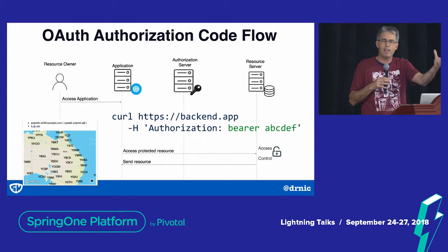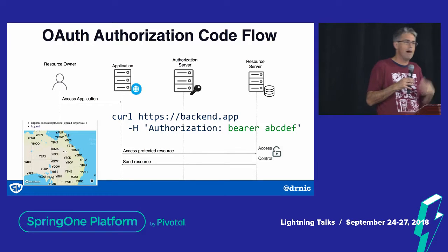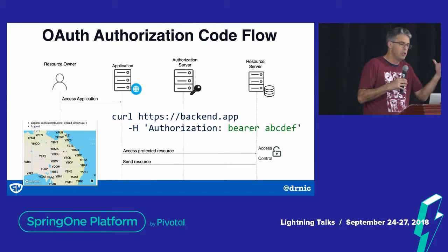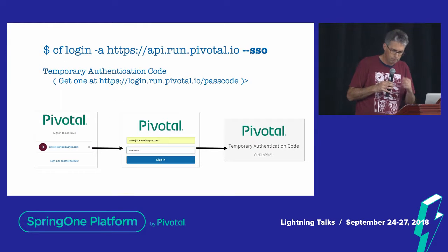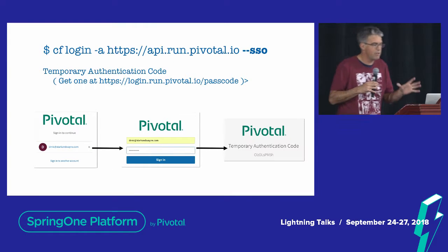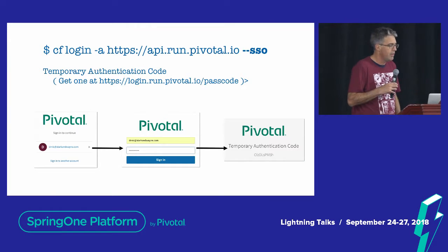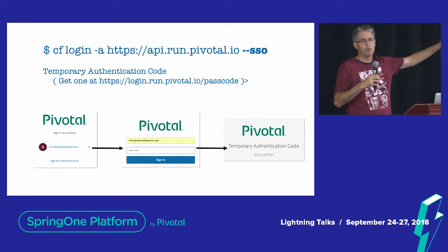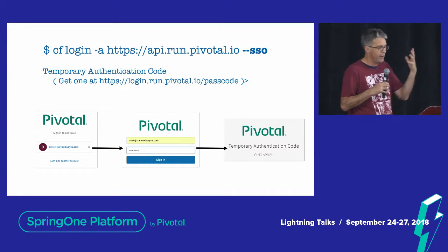From one app to the other — this is how your microservice apps are going to be passing around what this user is allowed to do. You might even know who the user is, but more importantly you know what they're allowed to do. If you've ever logged into Pivotal Web Services or a PCF tile, you'll have seen this flow — the selecting of who I am, perhaps going off to a back-end federated identity server.